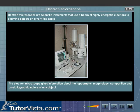The electron microscope gives information about the topography, morphology, composition and crystallographic nature of any object.